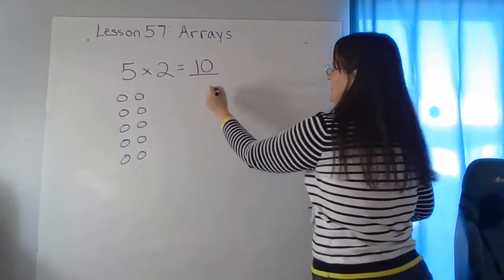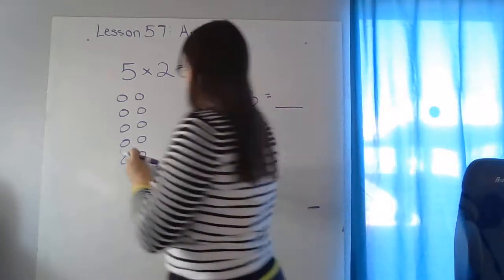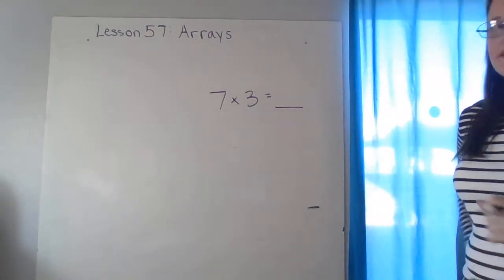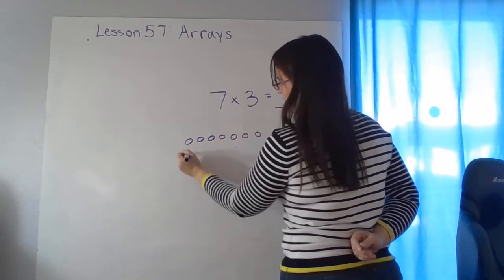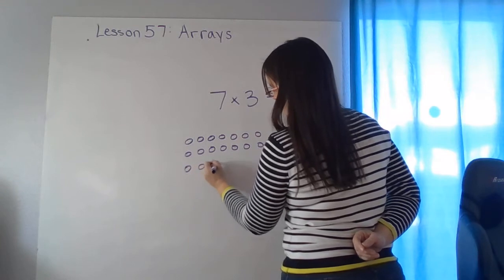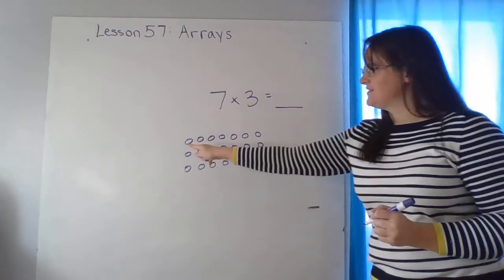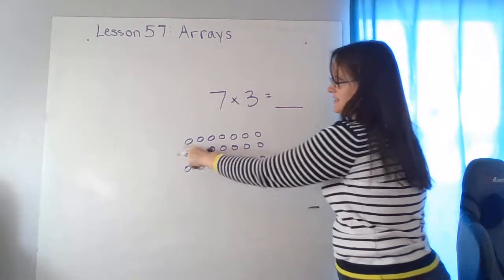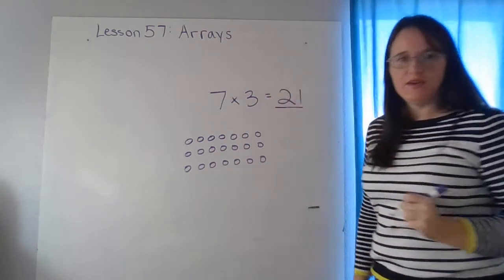Our next one is seven times three. So show me your array and then write down your answer. Here's my array. Seven times three. I have seven in each row and a total of three rows. Let's count my sevens. Seven, fourteen, twenty-one. So seven times three equals twenty-one.